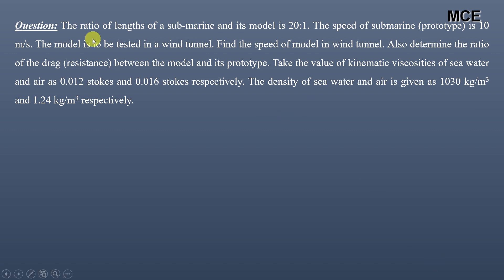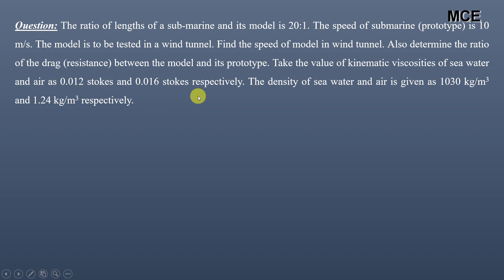The question states that the ratio of lengths of a submarine and its model is 20 to 1. The speed of the submarine prototype is 10 meters per second. The model is to be tested in a wind tunnel. We have to find the speed of the model in the wind tunnel and determine the ratio of drag resistance between the model and its prototype. The kinematic viscosities of sea water and air are 0.012 stokes and 0.016 stokes respectively, and the densities of sea water and air are 1030 kg/m³ and 1.24 kg/m³ respectively.